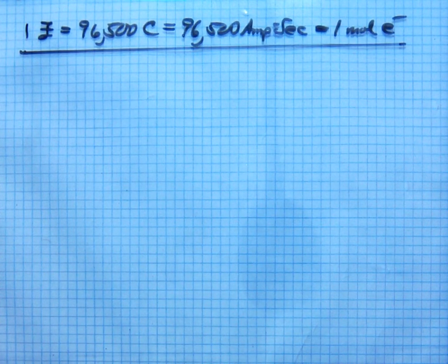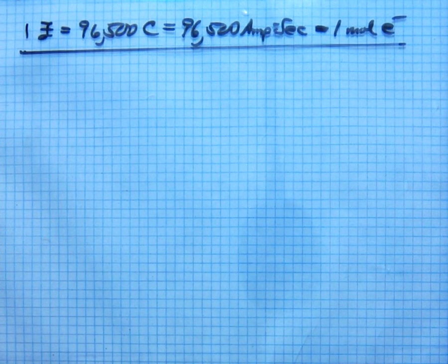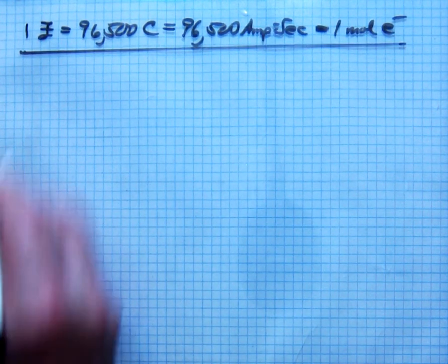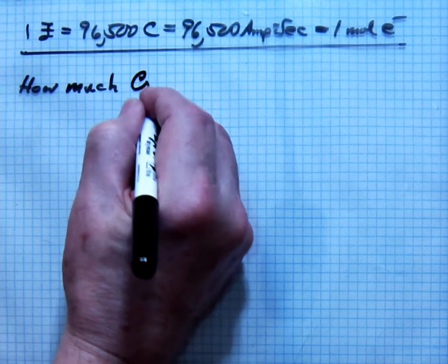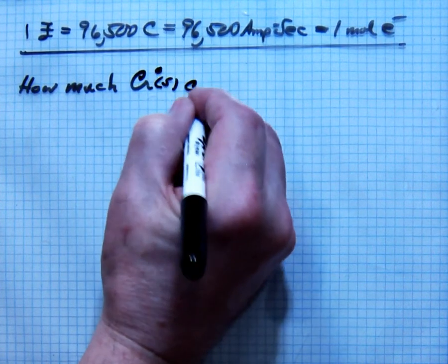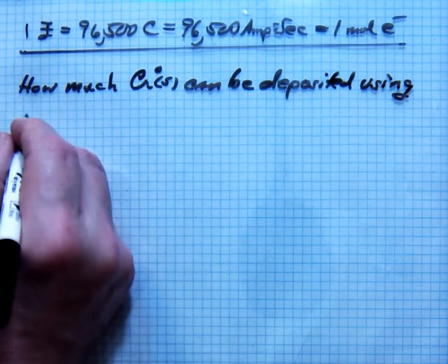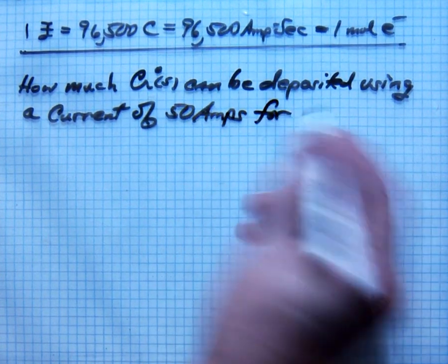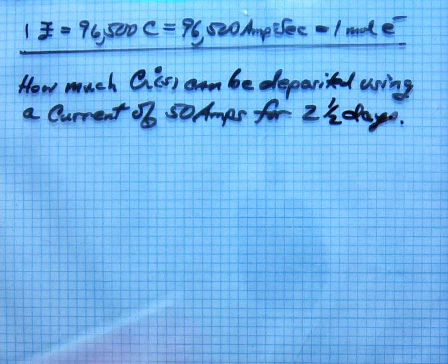We're going to use this in a dimensional analysis sequence to determine the mass of a metal, how much metal will be deposited as a function of time and current, or how long would it take to deposit such a given amount using a certain Amp. Those are two types of problems that you're going to face on exam day. Let's start out with how much chrome CR metal solid can be deposited using a current of 50 amps for two and a half days.